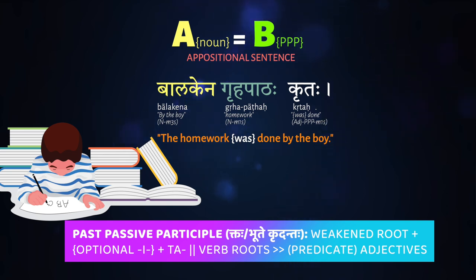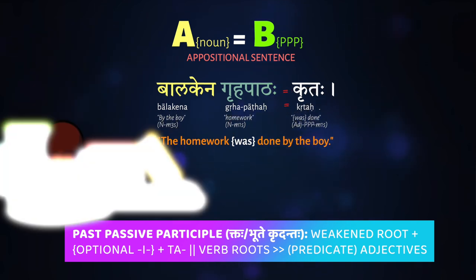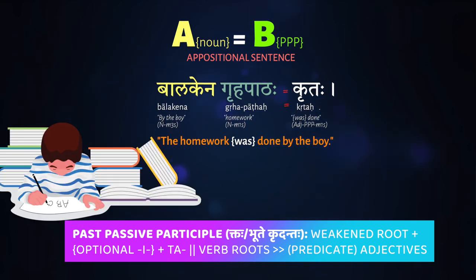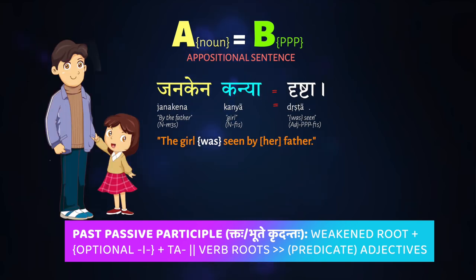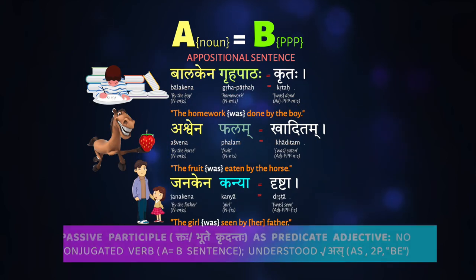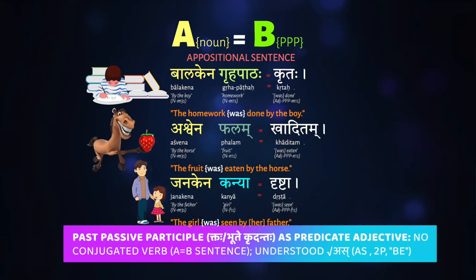An example would be: balakena gruha paathaha kritaha — the homework was done by the boy. Ashvena palam kaditam — the fruit was eaten by the horse. Kanya janakena drishta — the girl was seen by her father, by janaka. In all these sentences we have no actual conjugated verbs.